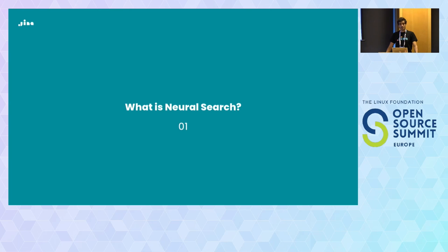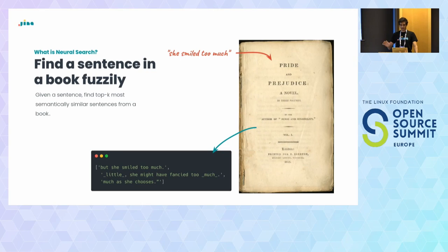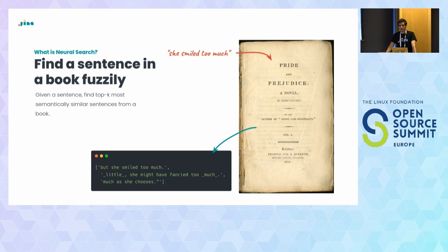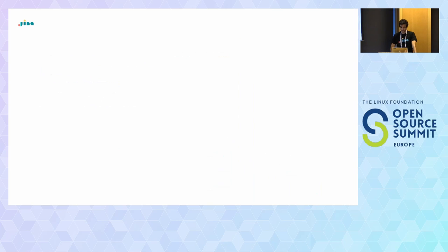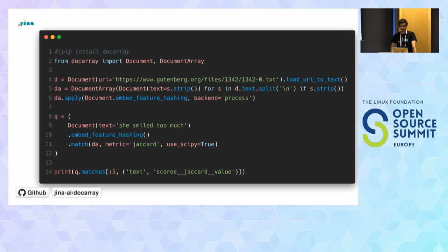Neural search is basically a search powered by machine learning, especially deep learning. A traditional search would be keyword-based — you search for a word in a book and find similar words. With neural search you can search with a paragraph, with semantic meaning; you can ask a question and it will not only look at the word but try to understand your sentence, like a human who has already read the book. With Jina you can build such a solution in a couple of lines.